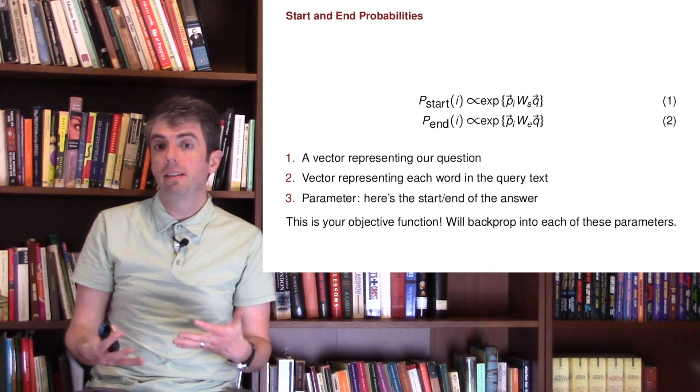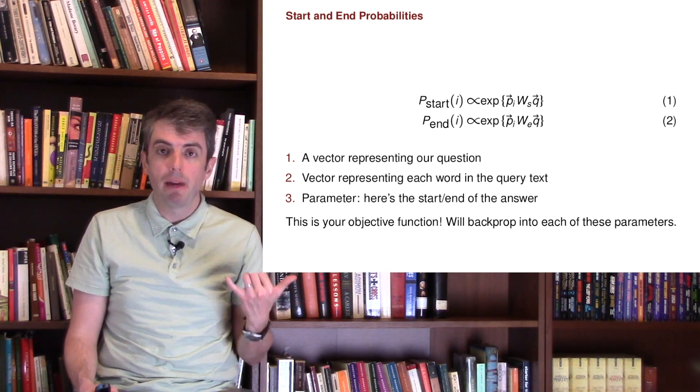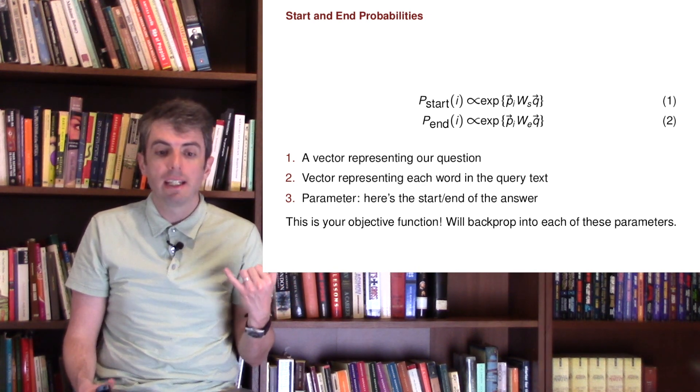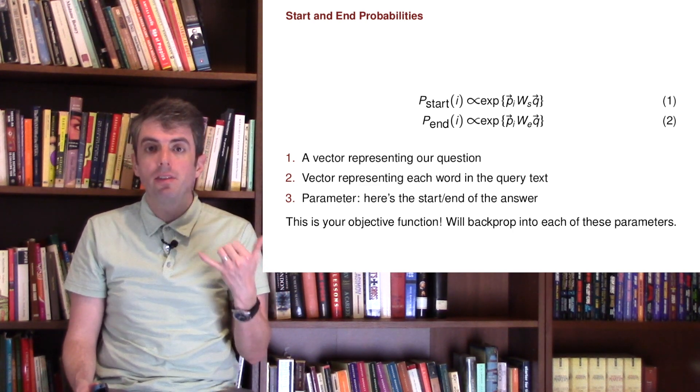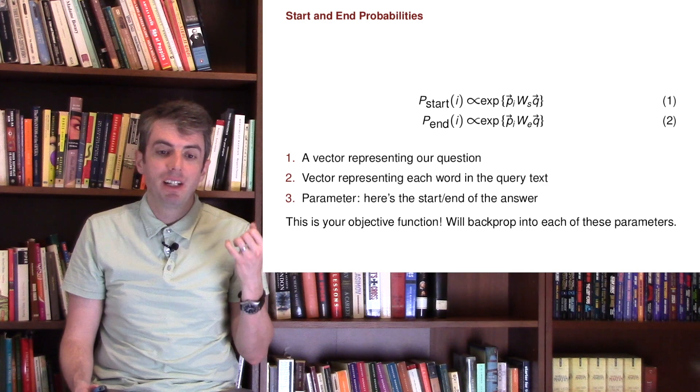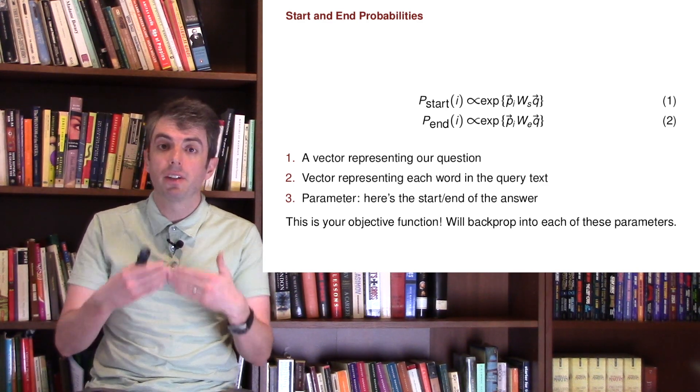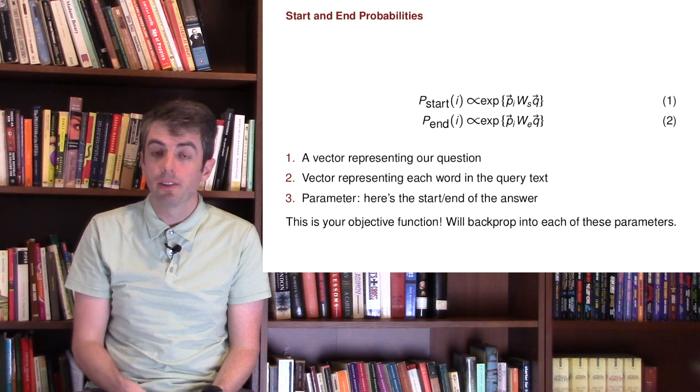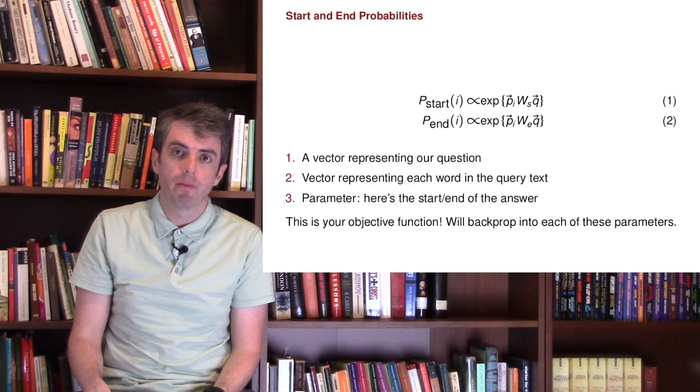Given those two inputs - the words in your passage and the question vector - you have a parameter that says this is where we end the answer, and this is where we start the answer given the question vector and the word vector. This is our objective function. We have examples of where answers begin and end in passages, and we're going to highlight that and backprop into the parameters p, w, and q. To backprop into these parameters, we need to define how they interact with the answer selection.